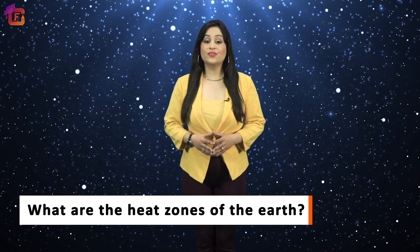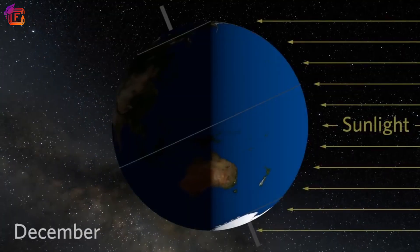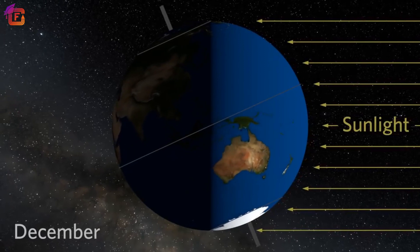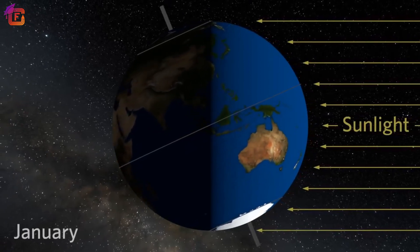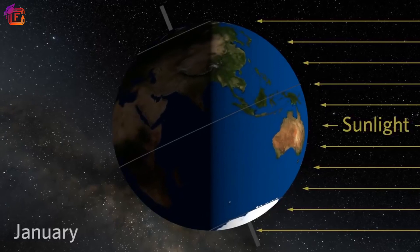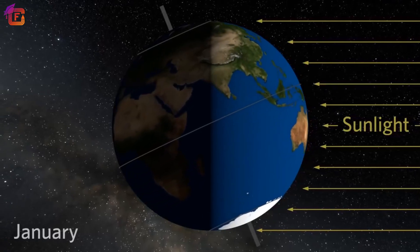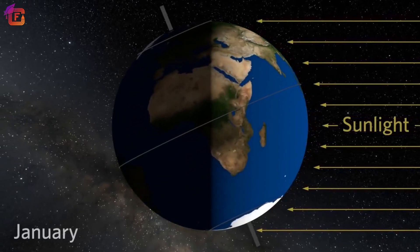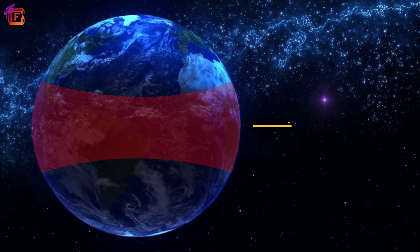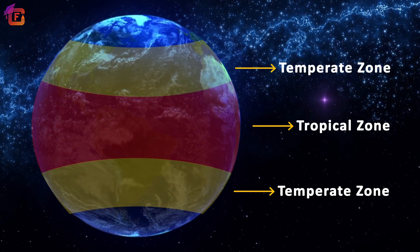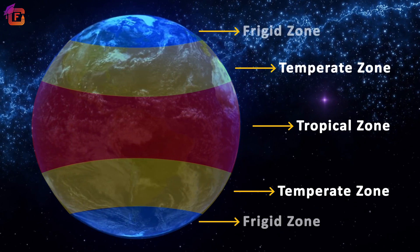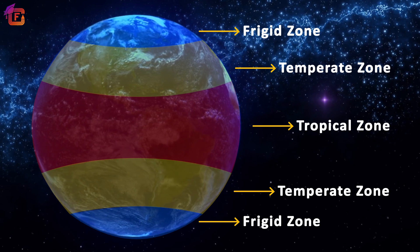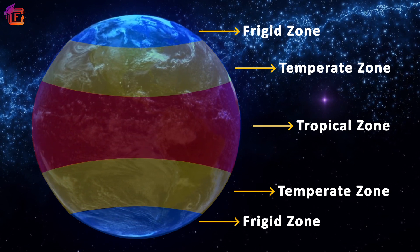What are the heat zones of the earth? Due to vertical and slanted rays of the sun, all parts of the earth do not receive equal amount of heat from it. The sun never shines overhead beyond the Tropic of Cancer and the Tropic of Capricorn. There are three heat zones: the tropical zone, the temperate zone, and the frigid zone. The parallels of latitude divide the globe into these three heat zones.